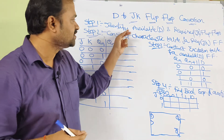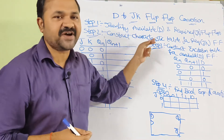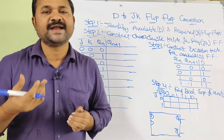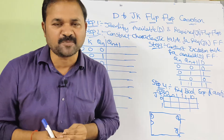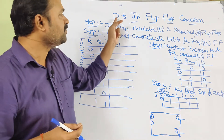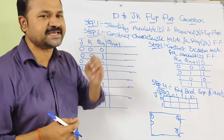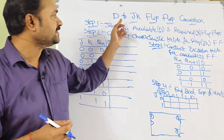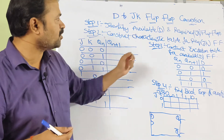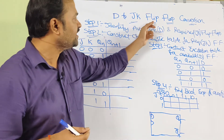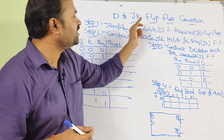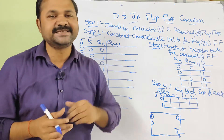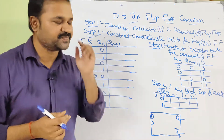Step 1 is to identify the available and the required flip-flops. Here the available flip-flop is the input flip-flop, that is the D flip-flop, whereas the required flip-flop is the output flip-flop, that is the JK flip-flop.